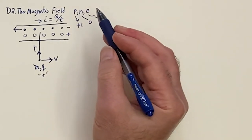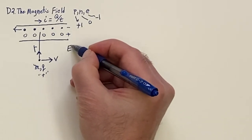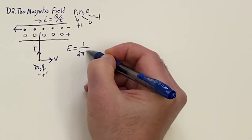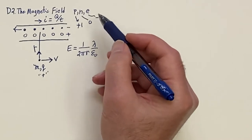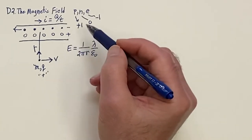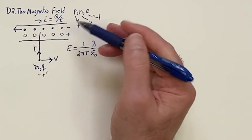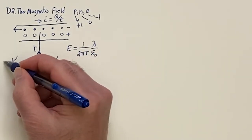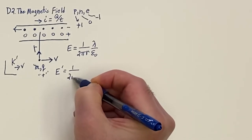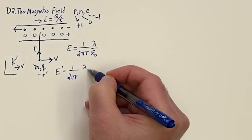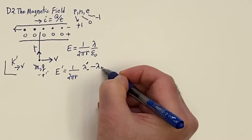The magnetic field — you respond to it when you move. The field set up by these charges: we just showed that a line of charge gives an electric field of 1 over 2 pi R, lambda over epsilon naught. But in the moving frame, there's no cancellation because in the lab frame the spacing is the same, so plus lambda and minus lambda cancel. In the prime frame — the moving frame — the electric field would be 1 over 2 pi R times a net charge density from electrons minus the plus effect.